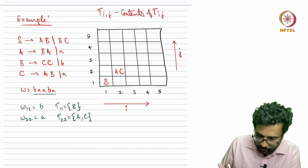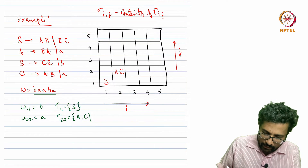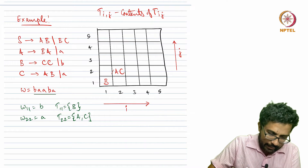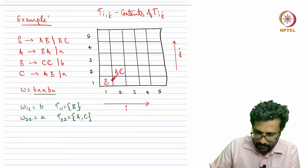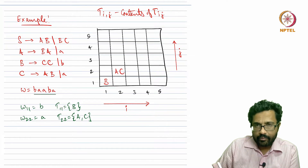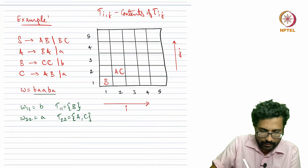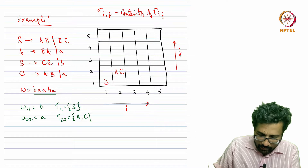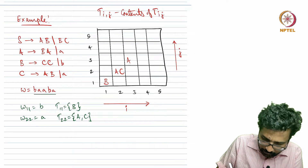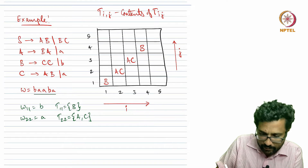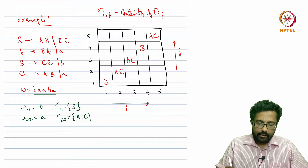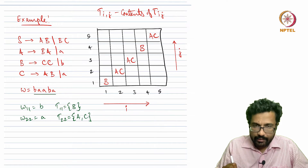Notice that columns correspond to i and rows correspond to j. The first order is to fill up the diagonals, then we slowly move up and fill entries above the diagonal; entries below the diagonal will not be filled and are not necessary. The third symbol is also a, so again A and C; the fourth symbol is b, so only B; and the fifth symbol is a, so again A and C. We have now filled the sets corresponding to single-length substrings.